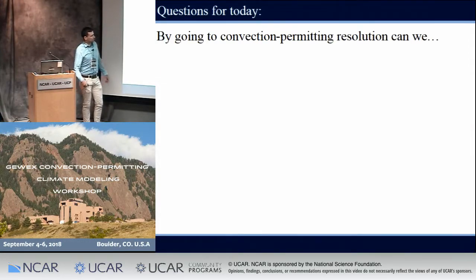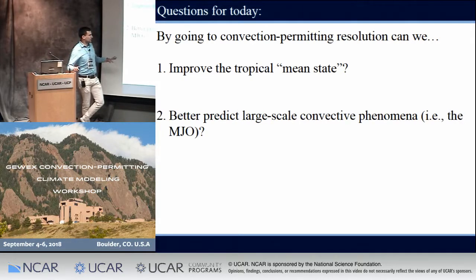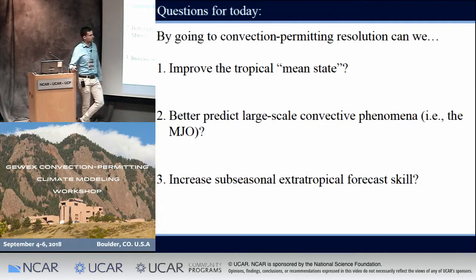Today we're going to try and touch on a few different questions. By going to convection-permitting resolution, can we improve the tropical mean states — and I'm putting 'mean state' in quotes for reasons I'll explain later. Can we better predict large-scale convective phenomena that heavily impact the extra-tropics? We're focusing on everyone's favorite intra-seasonal phenomenon, the Madden-Julian oscillation. And finally, can we also improve extra-tropical circulation skill in these convection-permitting models?